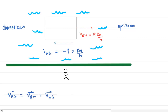More formally, we use the relative velocity equation. It tells us that the velocity of the boat relative to the ground — which is what we're looking for in part A — equals the velocity of the boat with respect to the water plus the velocity of the water with respect to the ground. We'll plug in the given values to find the velocity of the boat with respect to the ground.